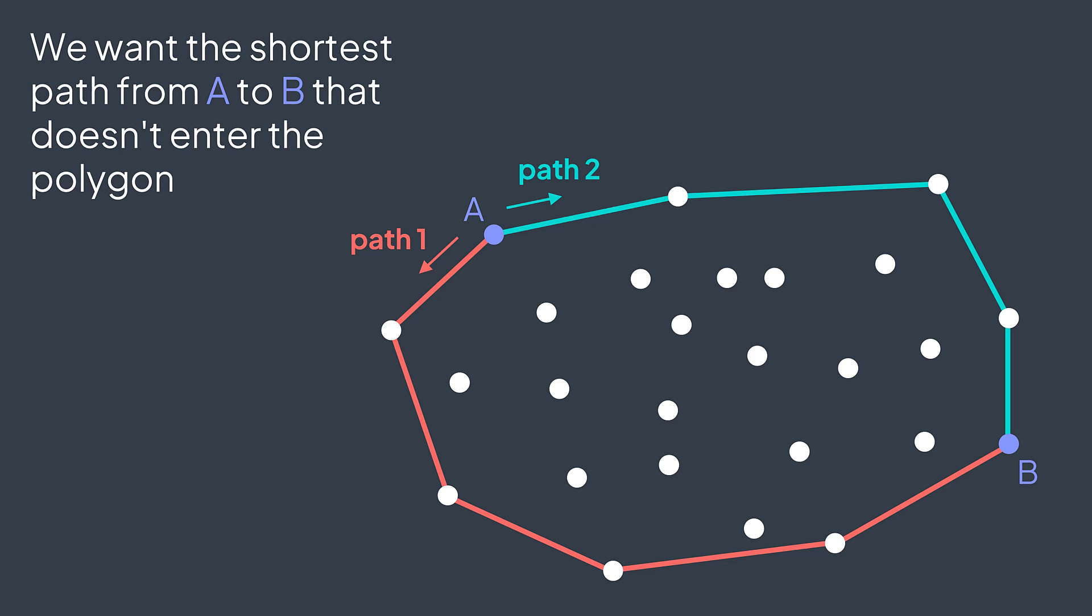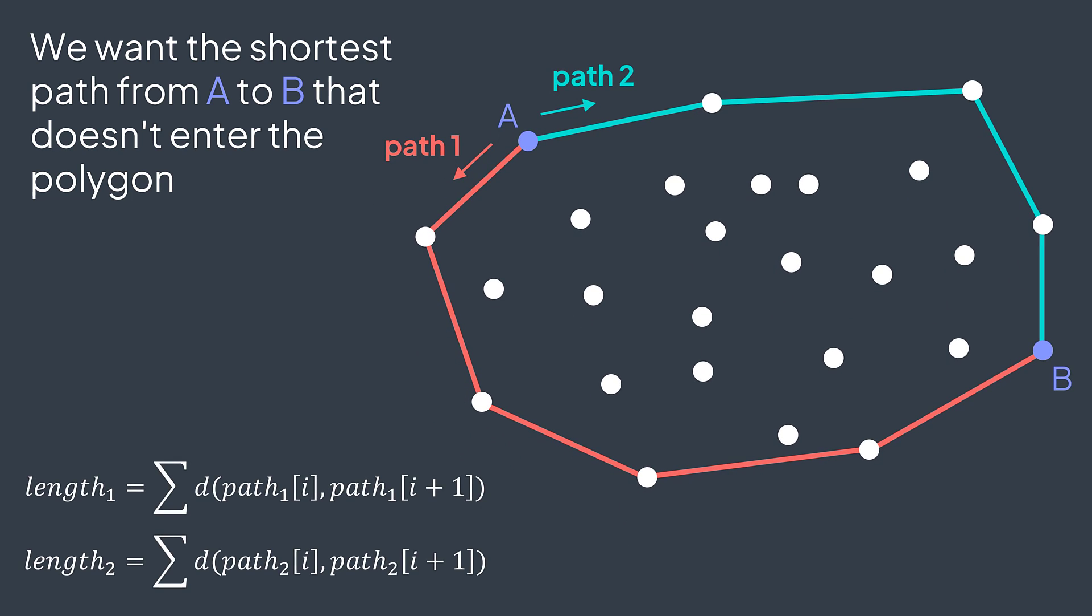To know which one of them do we take, we just calculate the length of each one of them and compare. The length is the sum of the distance between each two successive points.